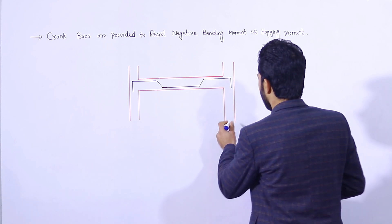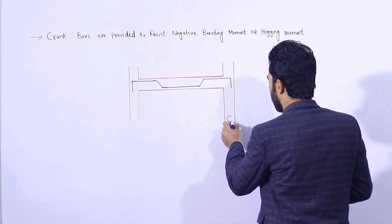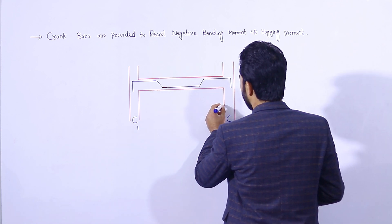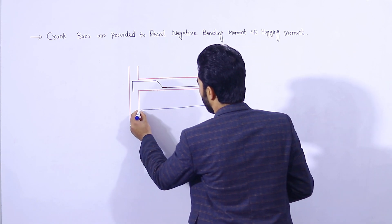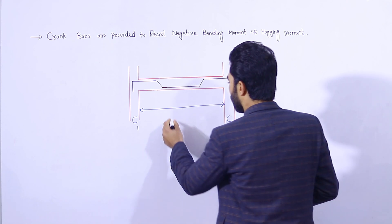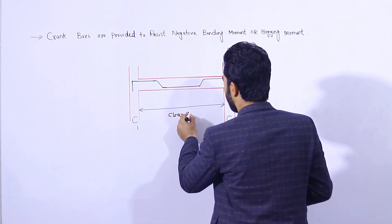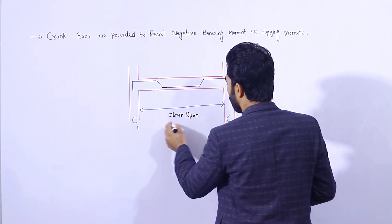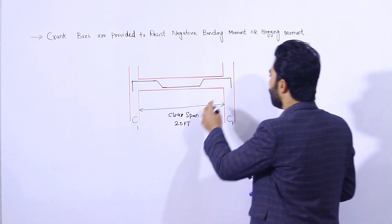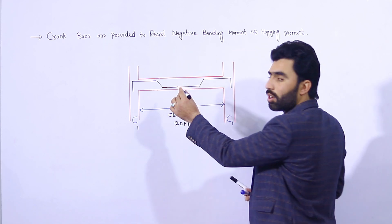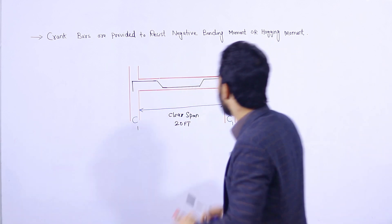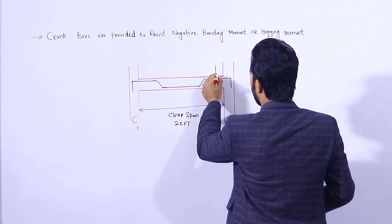As you can see, this is column C1 and this is another column C1. This is the span between the two columns, or the clear length — this is called the clear span. Suppose the span is 20 feet. Here you can see this is the crank bar.